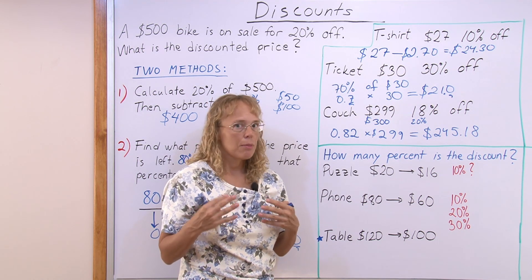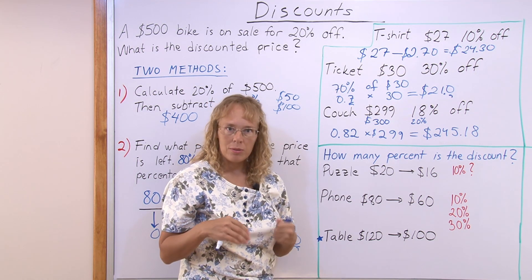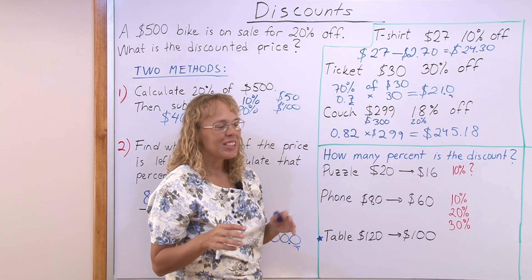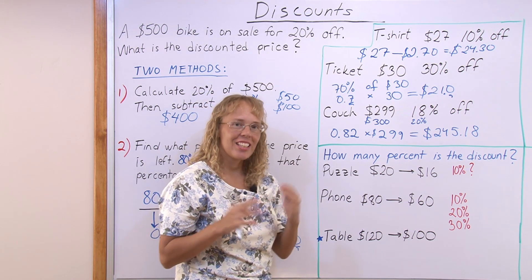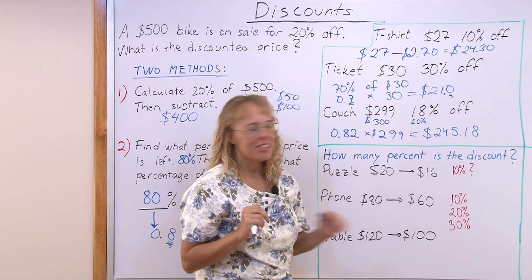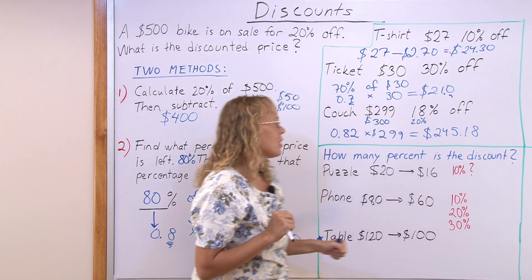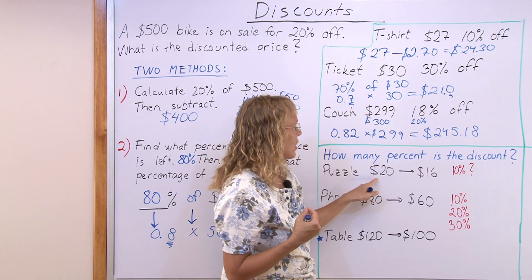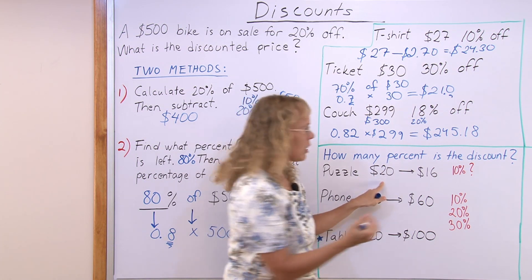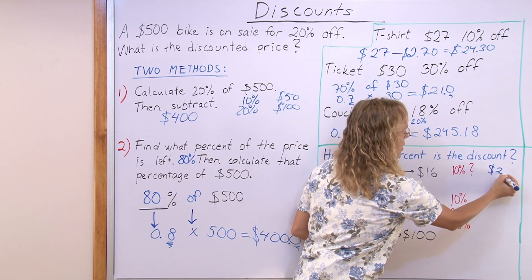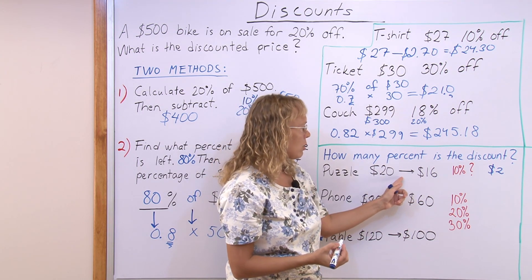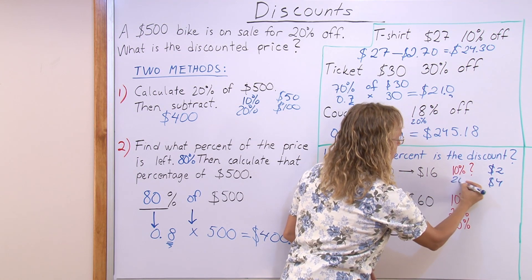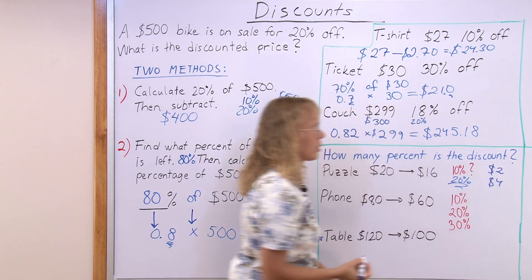There is an exact method for this, but for now let's just evaluate and try to guess — checking and guessing can work. I'm going to guess that maybe the discount was 10%. If the discount was 10%, I take the 10th part of $20, which is $2. So 10% would be $2 off the price, but it wasn't $2 off — it is $4 off. It's exactly double that, so the discount percent is 20%.